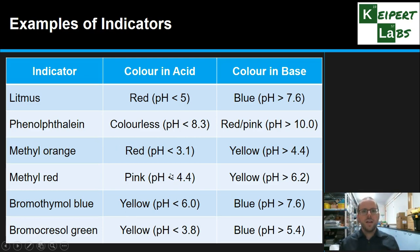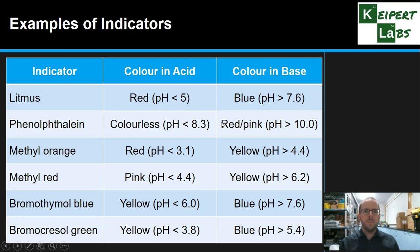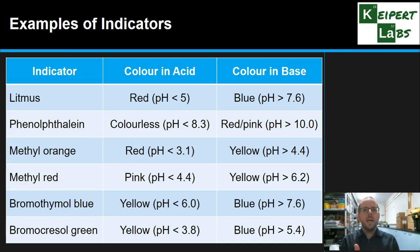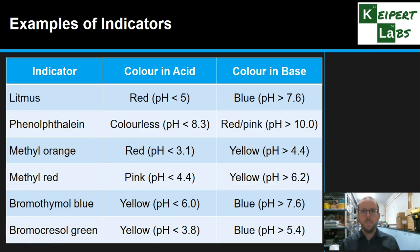Each indicator has a certain colour when the pH is less than a certain number and another colour when the pH is greater than another number. In between these two values, the colour is intermediate — it's changing from one version to the other, and at some point you get a 50-50 mixture and an in-between colour. For example, litmus is red when pH is less than 5 and blue when greater than 7.6, meaning between 5 and 7.6 you get various shades of purple. Likewise, phenolphthalein goes from colourless to a bright pink, so in-between you get a pale pink.